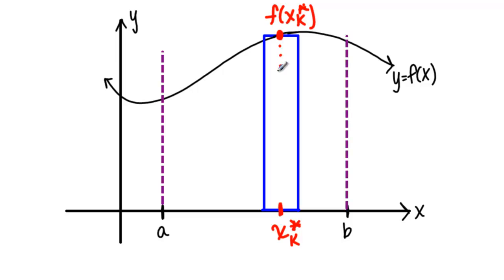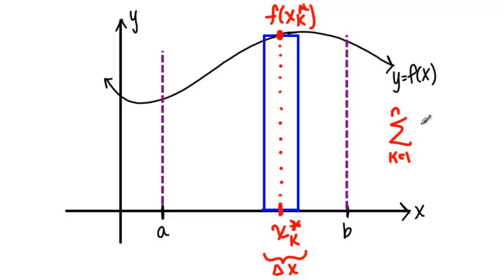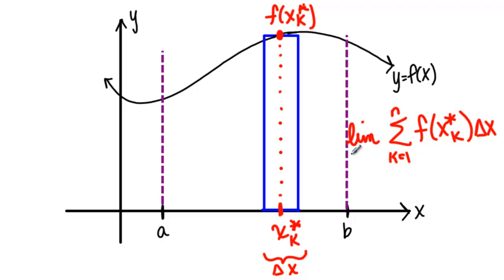That gives you the height of the rectangle, and then the width of the rectangle was delta X. Those could be combined together to give you the Riemann sum — adding up from rectangle number 1 to rectangle number N of the height, F of X sub K star, times the width, delta X. Height times width gives you the area of the rectangle, and the summation adds up the area of all those rectangles between A and B. Then we took the limit as N went to infinity, and that turned into the integral from A to B of F of X dx.